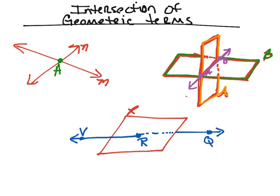The last thing we're going to look at is what happens if we have a plane and a line. I've got a plane here — I'm calling this plane R; remember, that's a capital subscript letter. And then I've also got the line, which is line VQ — you've got to imagine it's going through this plane. These two intersect each other right here at this specific point, so they intersect at point R. Whenever we have a plane and a line and they intersect each other, they're always going to intersect each other at a point.